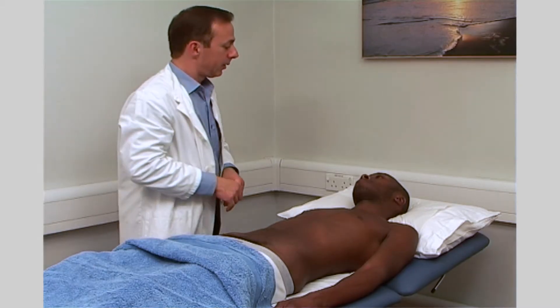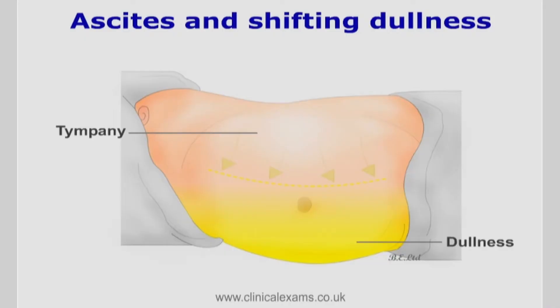Confirm this by asking the patient to lie on their side and after a few moments percuss again. The fluid would have shifted to the side they are lying on and air traveled to the top side. The fluid filled area will produce dull sounds and where there is air it will be resonant. This is called shifting dullness and you must test for this especially if the patient presents with abdominal swelling.